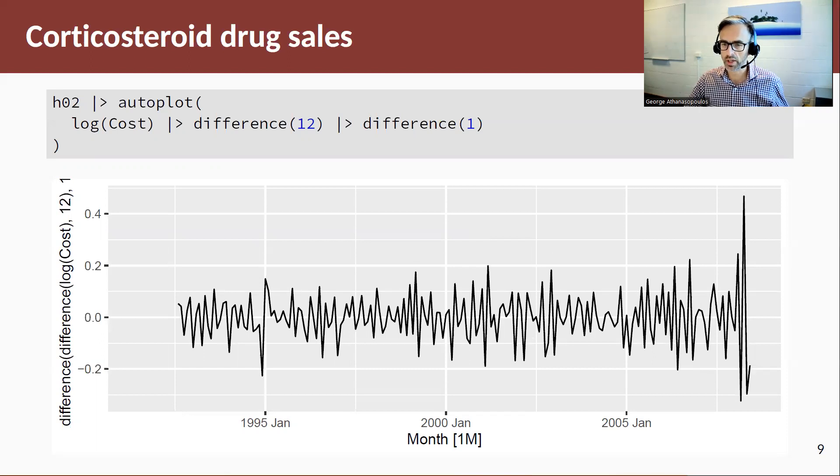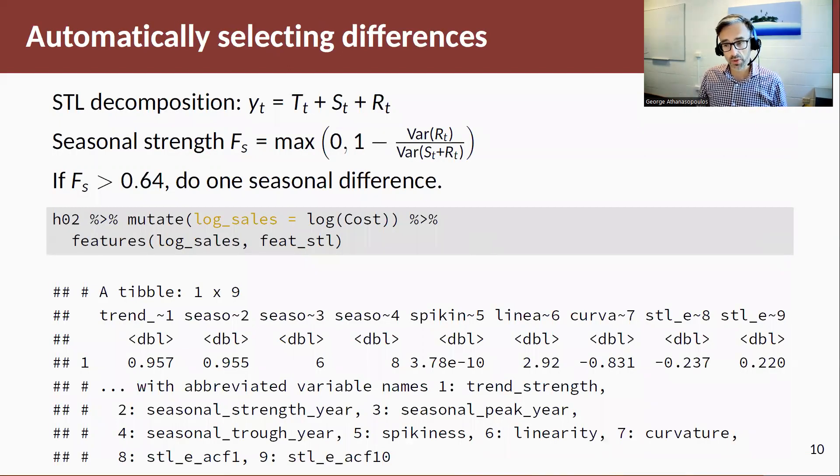So similar to non-seasonal data for seasonal unit roots, there are formal tests to actually test, but they don't work very well. So Rob and collaborators have come up with looking at an alternative way of deciding whether we need a seasonal difference or not. So the alternative way is actually based on features of time series and is based on the STL decomposition.